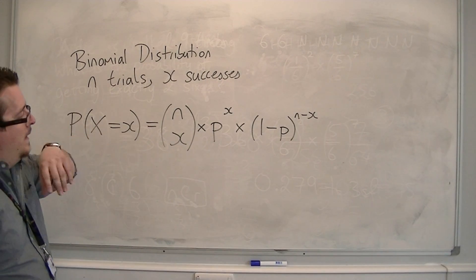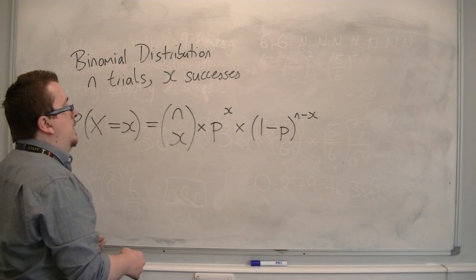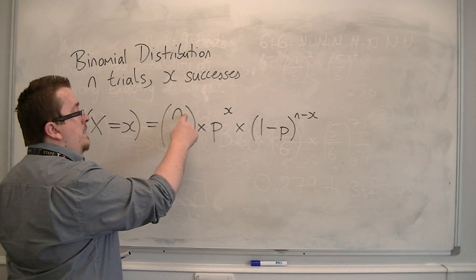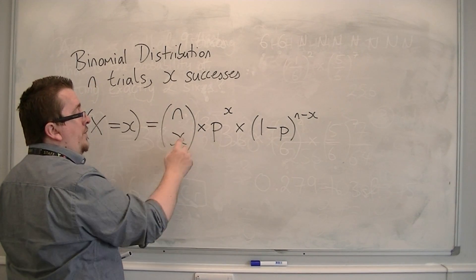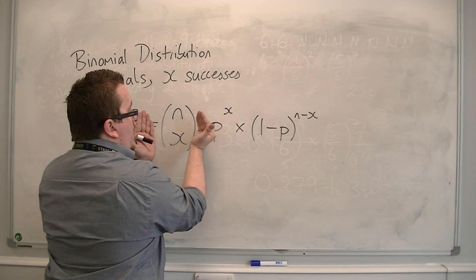So this is saying, as referring to the previous example, I had out of nine trials, I wanted two sixes to appear. That was the number of combinations.